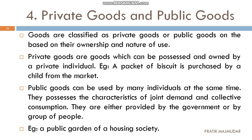Next are private goods and public goods. Private goods are those where the ownership of the product is in private hands. When you possess it and own it, it is considered a private good. For example, if you purchase a packet of biscuits, the ownership of that biscuit is yours — whatever you do with it, because it's a private good.